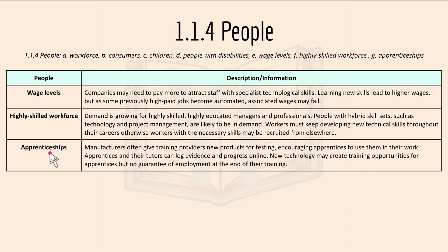For apprenticeships: manufacturers often give training providers new products for testing, encouraging apprentices to use them in their work. Apprentices and their tutors can log evidence and progress online. New technology may create training opportunities for apprentices, but there is no guarantee of employment at the end of the training.